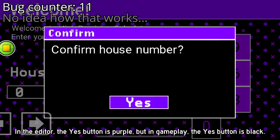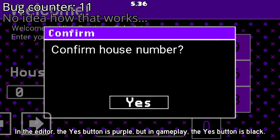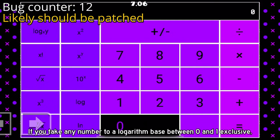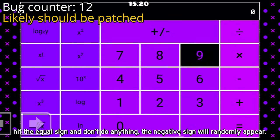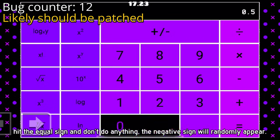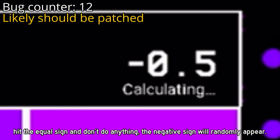In the editor, the yes button is purple, but in gameplay, the yes button is black. If you take any number to a logarithm base between 0 and 1 exclusive, hit the equal sign and don't do anything, the negative sign will randomly appear.